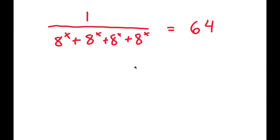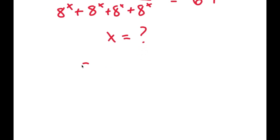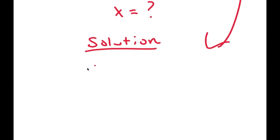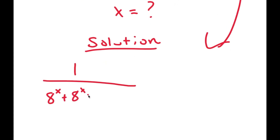So in this problem, I have 1 over a to the power of x plus a to the power of x plus a to the power of x plus a to the power of x is equal to 64, and I want to find the value of x. For my solution I'm going to start by rewriting my equation: 1 over a^x plus a^x plus a^x plus a^x equals 64.